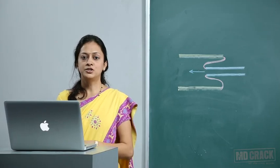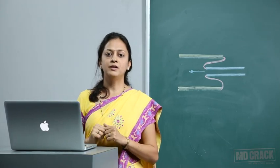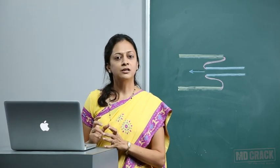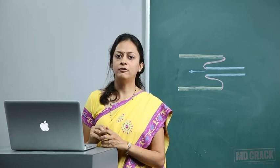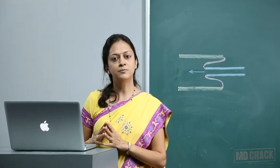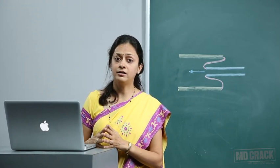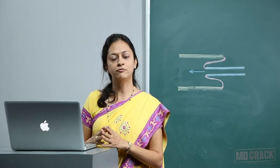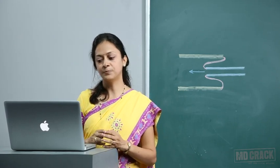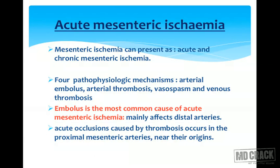Acute mesenteric ischemia is an important topic. Always remember it can be arterial as well as venous — there are four forms: arterial embolus, arterial thrombosis, vasospasm, or venous thrombosis. Embolus is the most common cause and mainly affects the distal arteries.